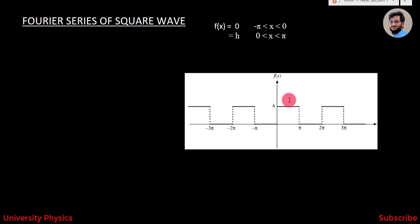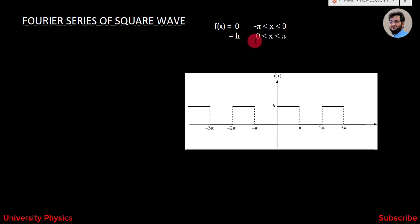This is the graph of square waves. It is clear from this graph that the function f(x) is 0 from -π to 0, and f(x) is equal to h from 0 to π. Looking at this graph, it is clear that the function is neither symmetric about the y-axis nor about the origin, so this function is neither odd nor even.